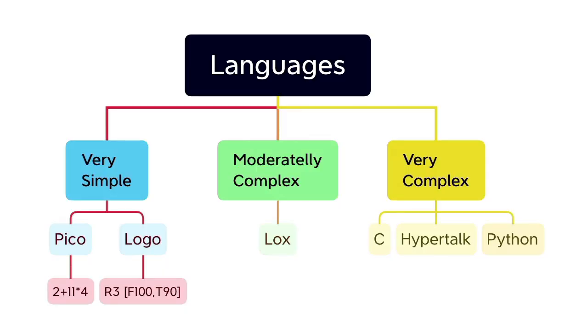Programming languages like C, Python and so on are very complex. Nystrom's Lox is moderately complex but too complex for my purposes. My own two languages called Pico and Logo are very simple. They are as simple as possible but not simpler, as Einstein would say.